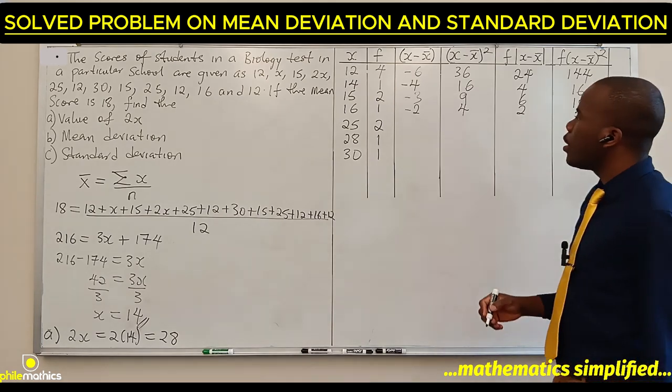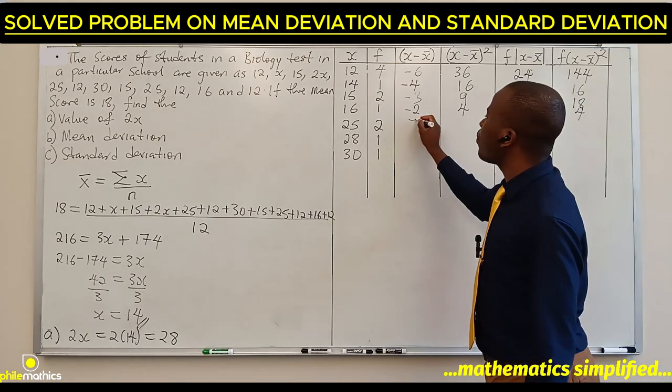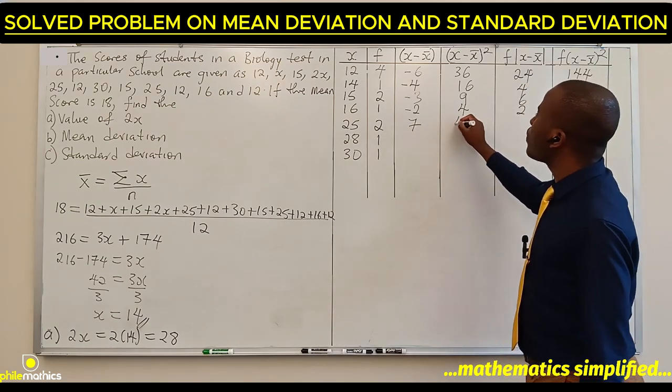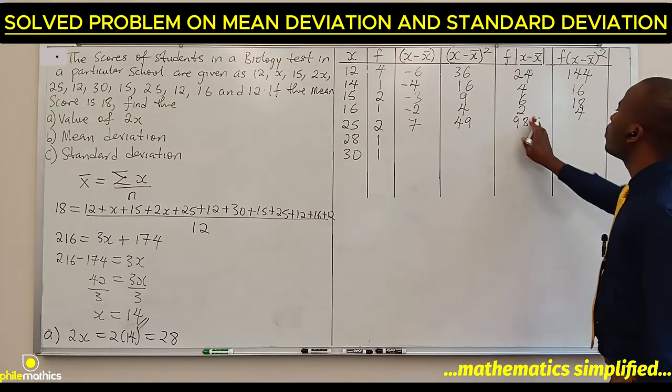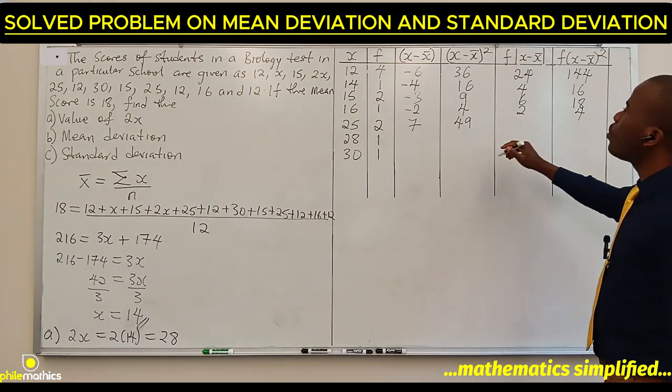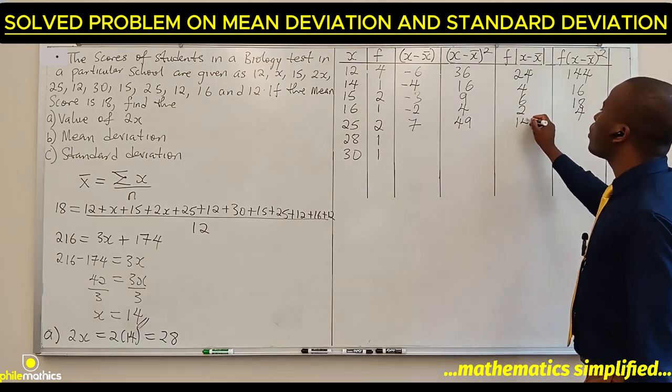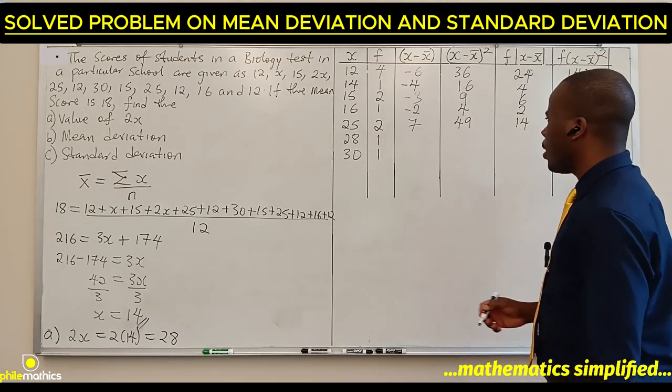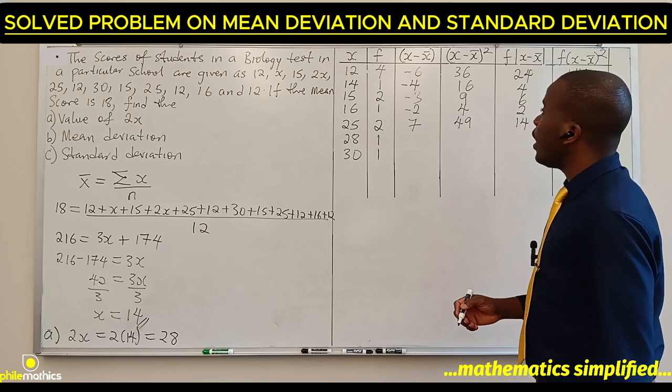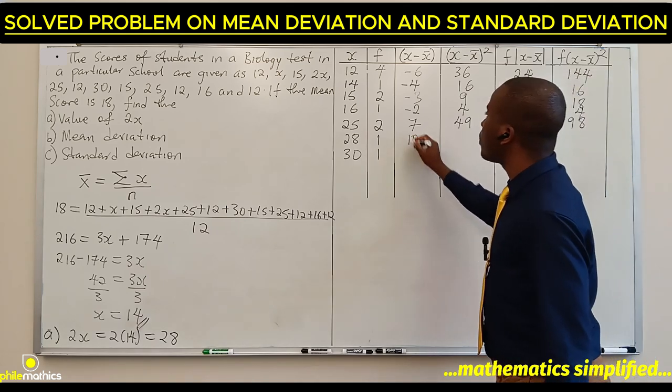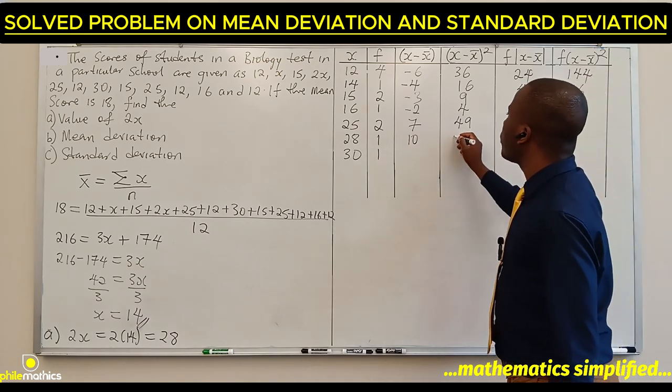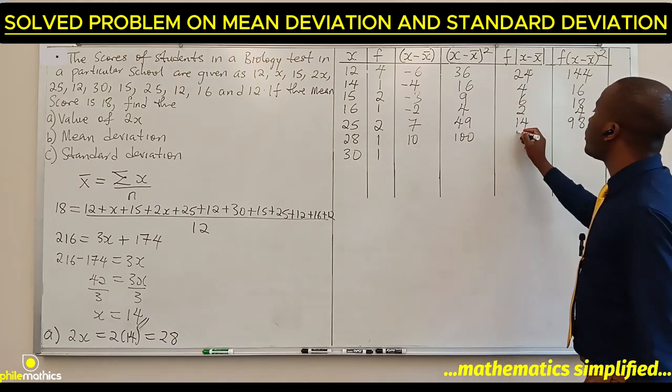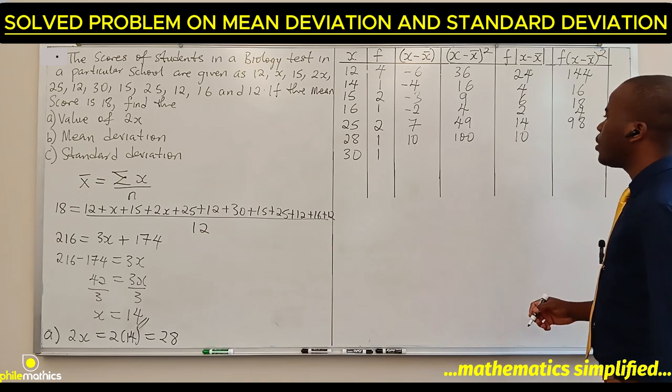25 minus 18 is 7. 7 squared is 49. 2 times 7 is 14, and 2 times 49 is 98. 28 minus 18 is 10. 10 squared is 100. 1 times 10 is 10, and 1 times 100 is 100.